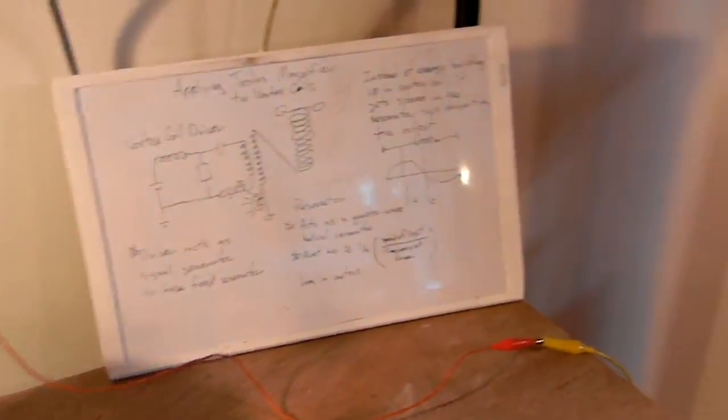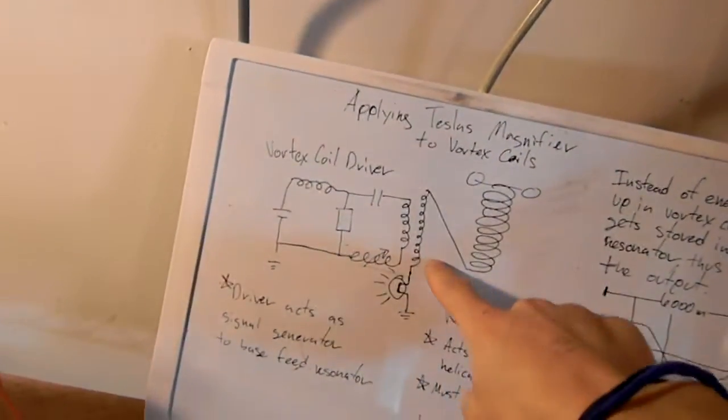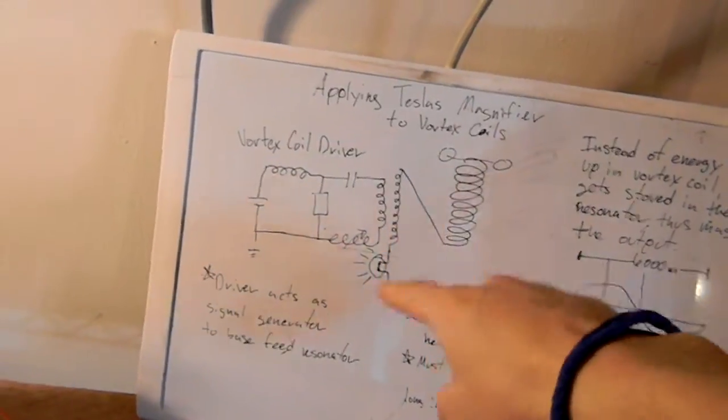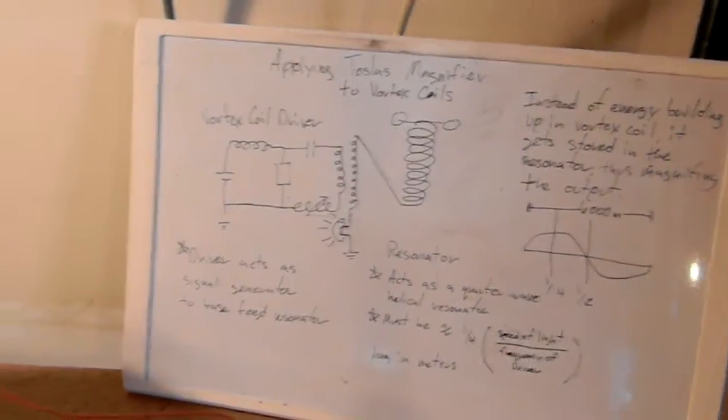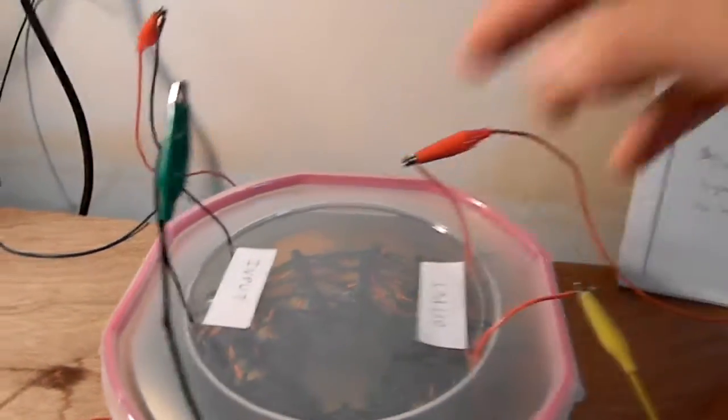So basically what this is doing is my driver or vortex coil is supplying a voltage at a certain frequency and that frequency is all dependent on the inductance and conventional stuff.